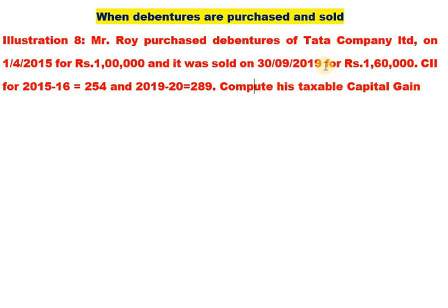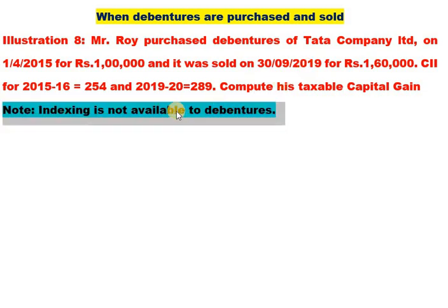In this case, the purchase was in 2015 and the sale is on 30-9-2019, so it has been held for 4 years. This makes it a long-term asset. However, note that even though it is a long-term asset, indexation is not applicable here.